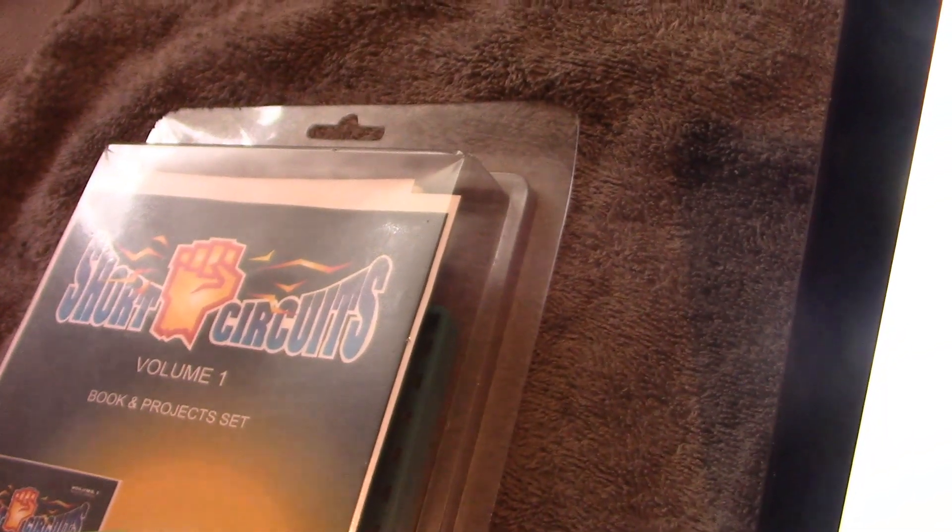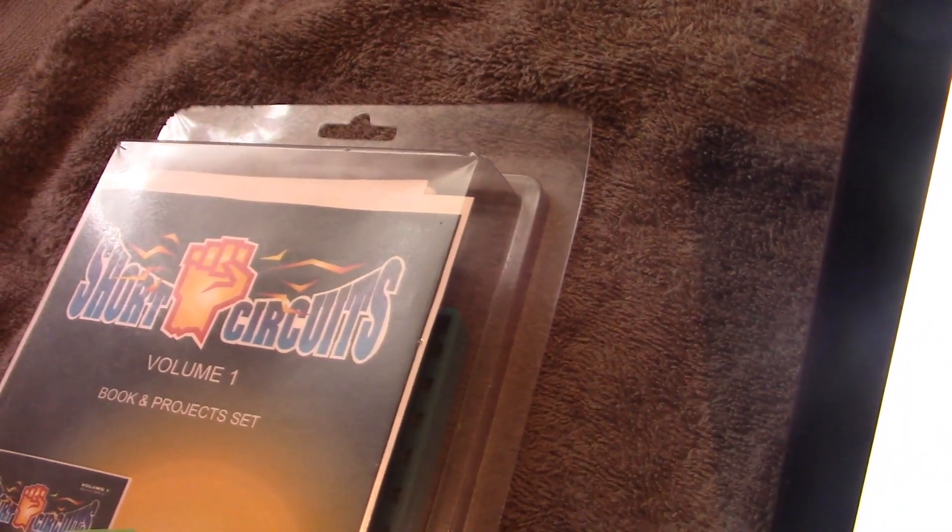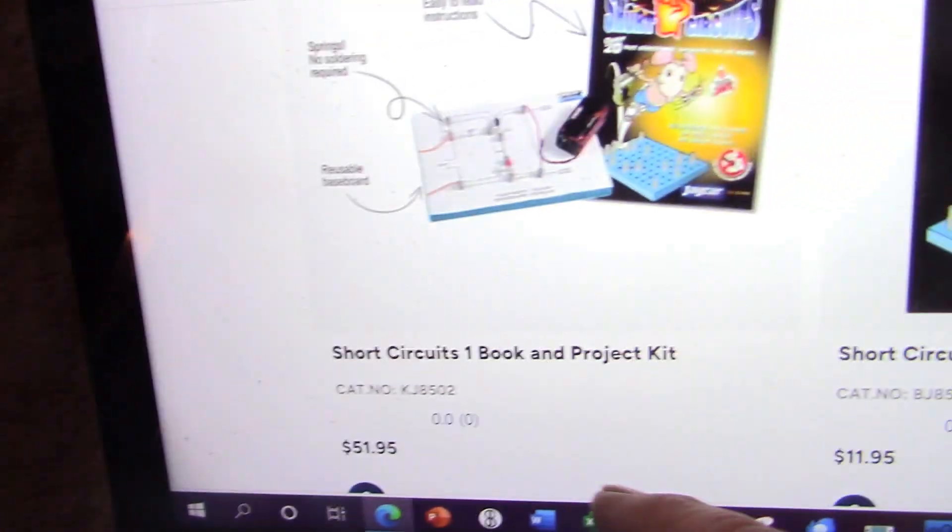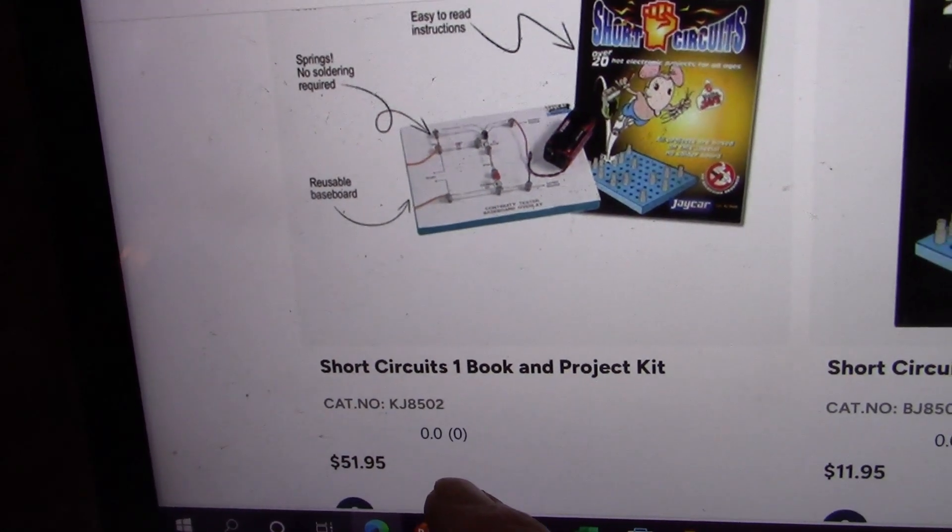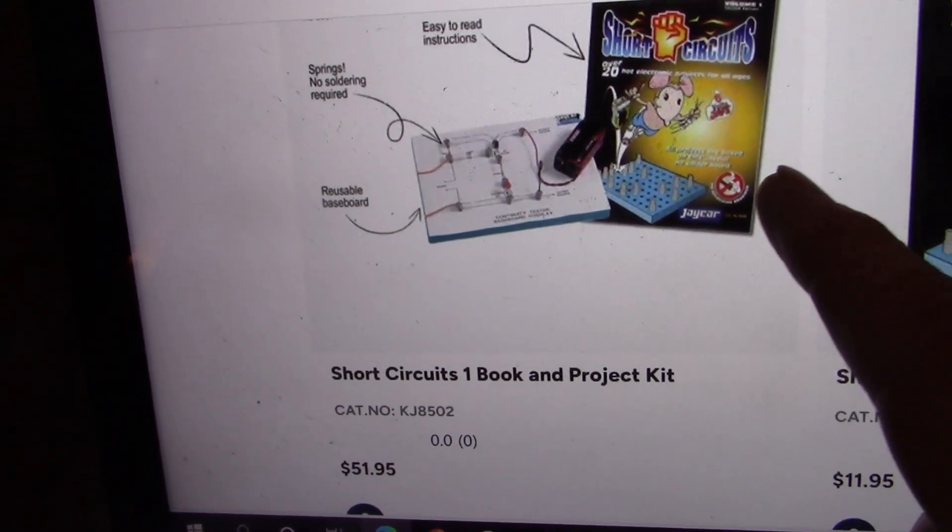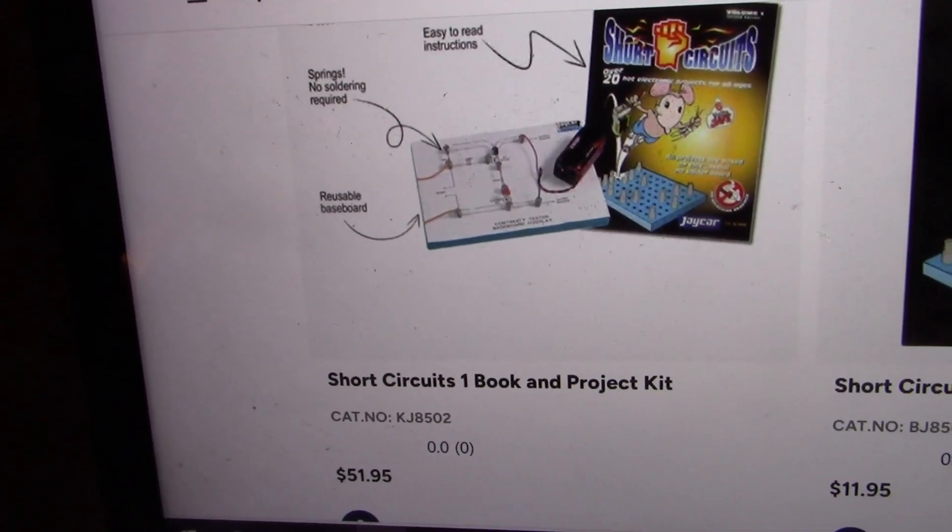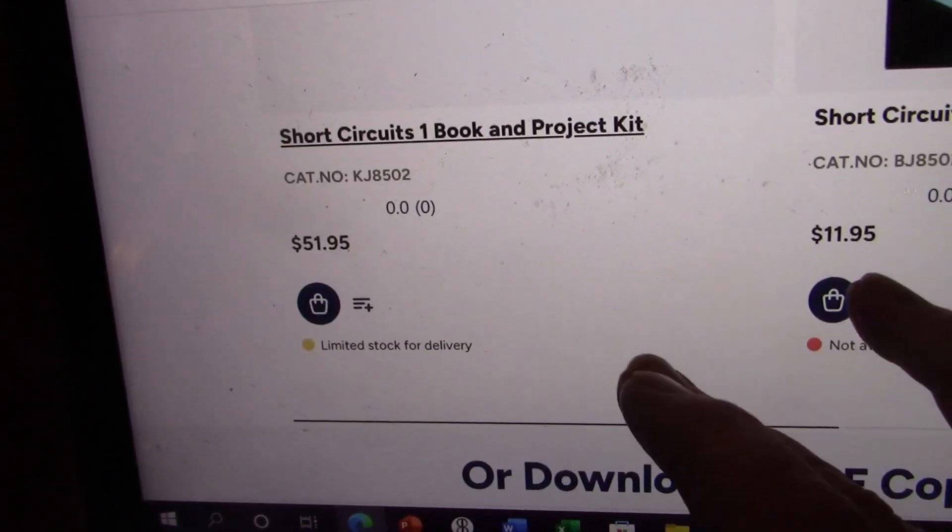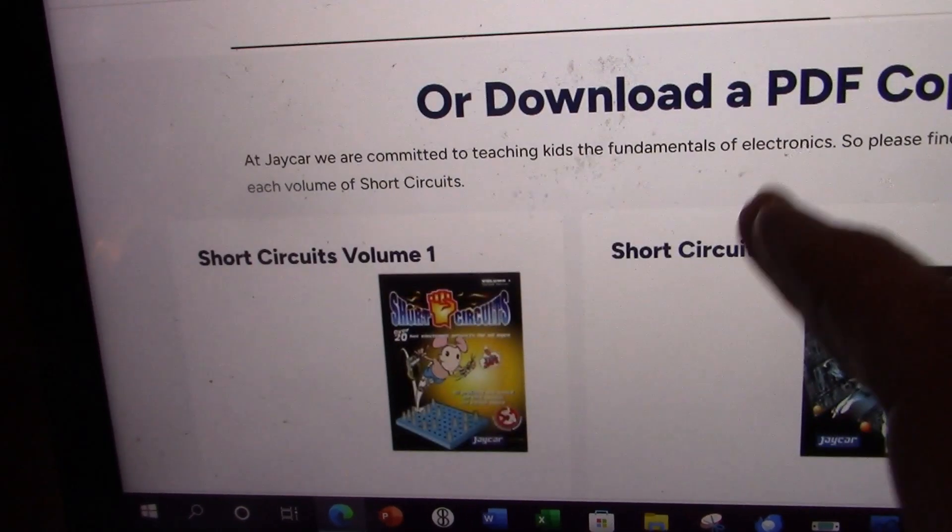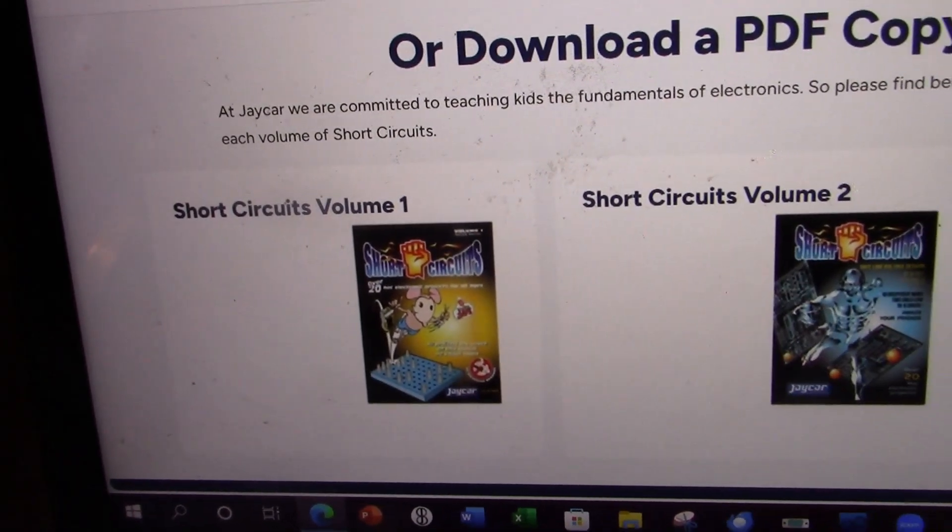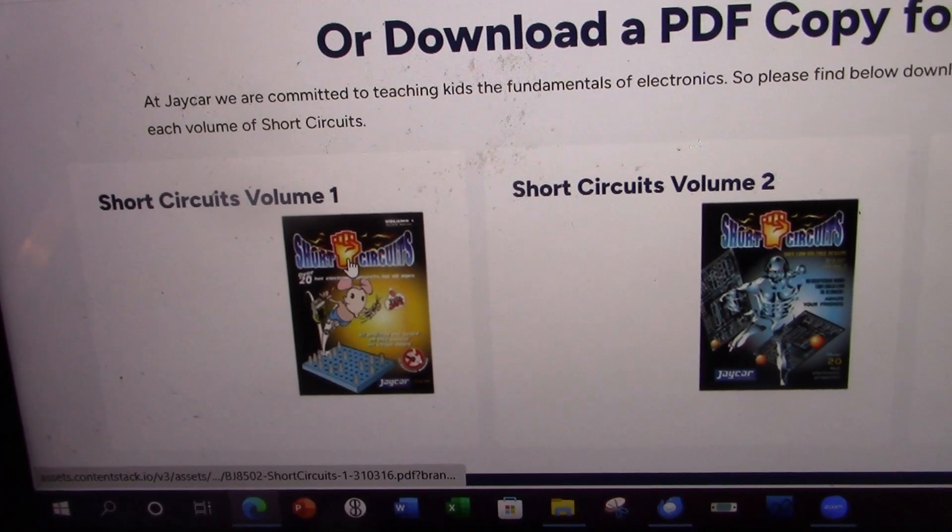This project kit is still a current product. You can still order it and it's fifty-one dollars ninety-five including the book. I don't have the book but the good thing is that they allow you to download the PDF. So let's take a look at Short Circuits Volume 1.